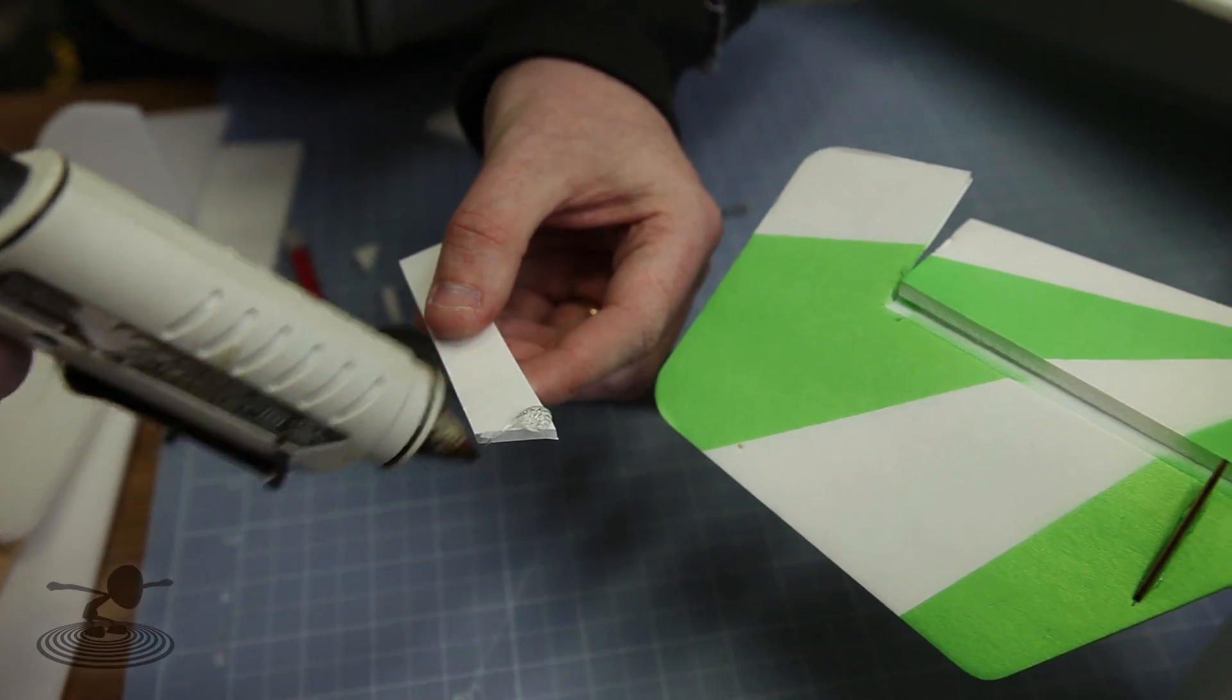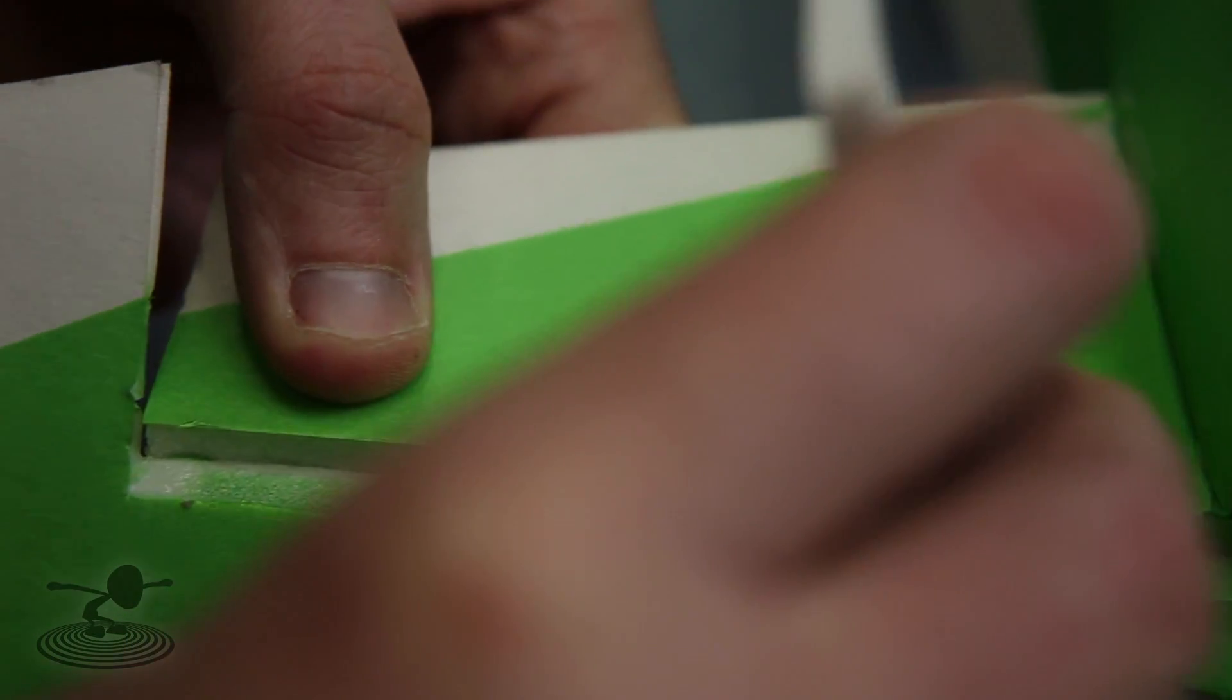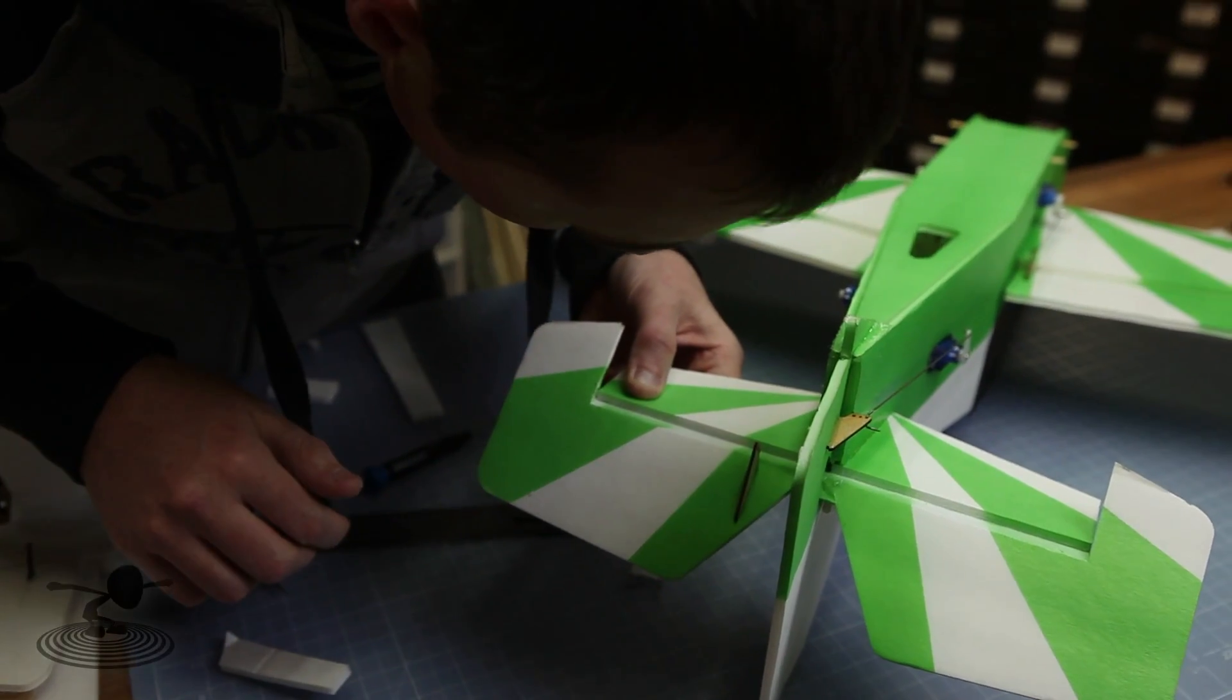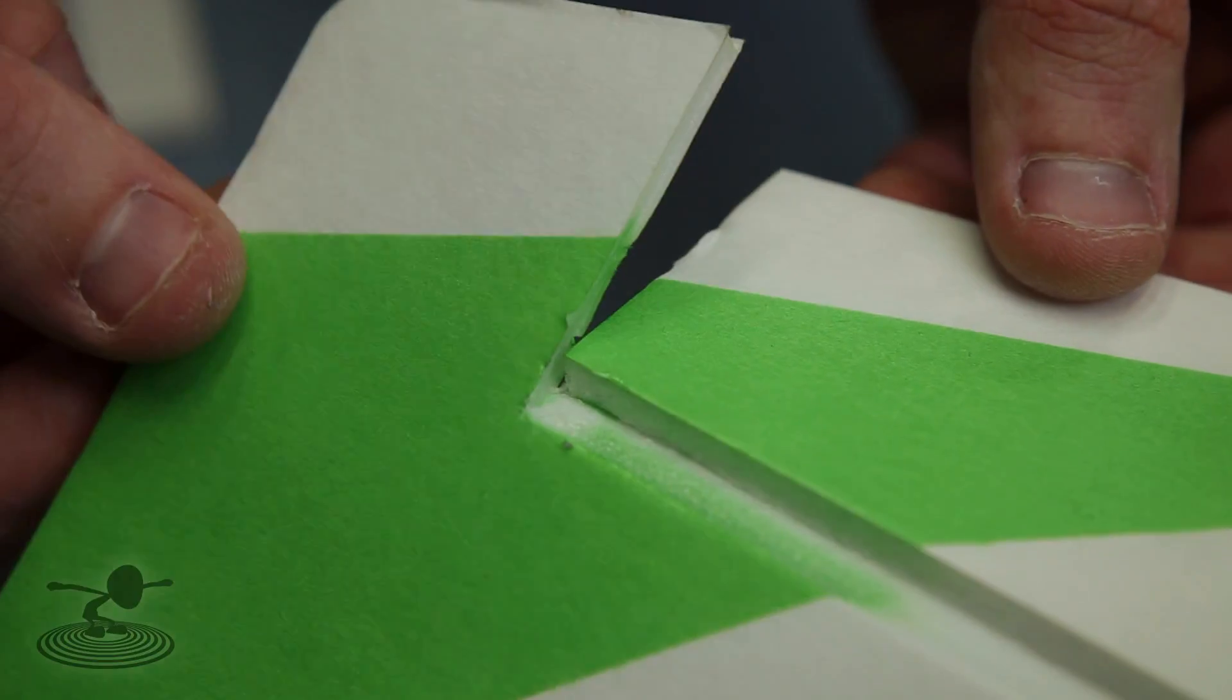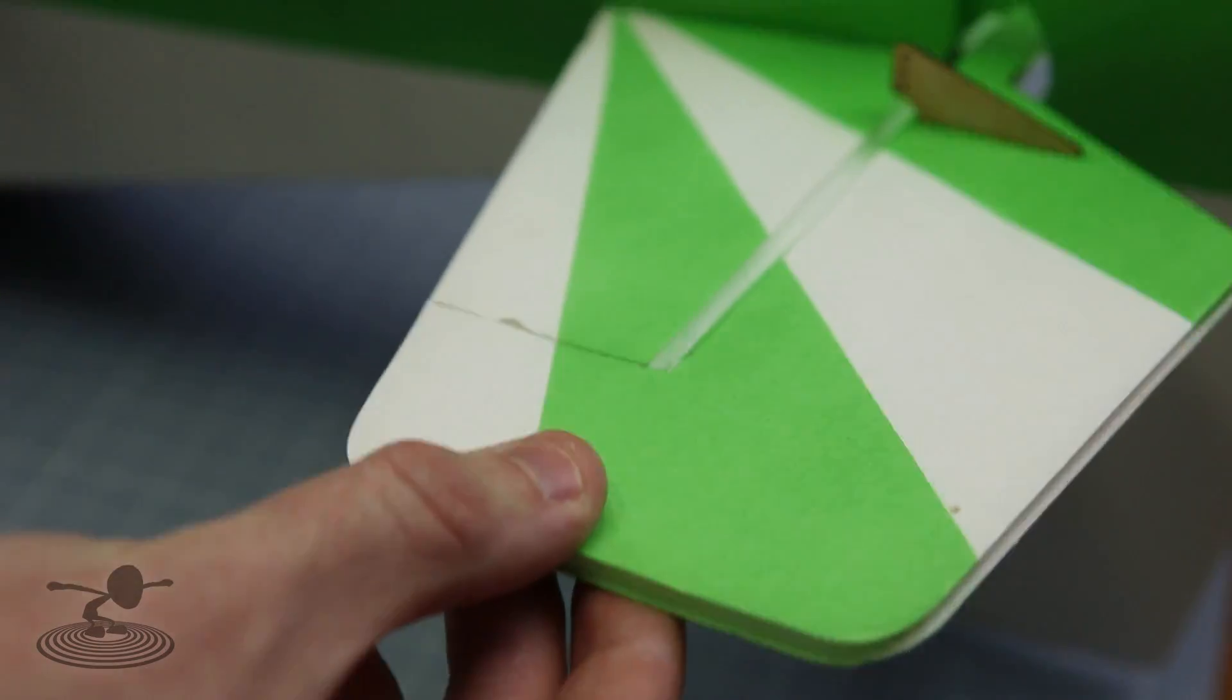Put a little hot glue on it, skim it across, real thin coat. Let it dry, let it cool. Make sure it's not tacky before you test the hinge. Okay, now test your hinge and it should be as good as new, probably even better.